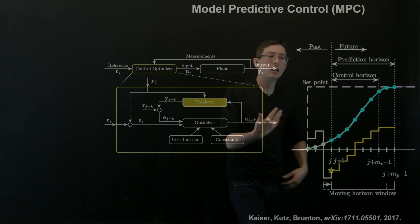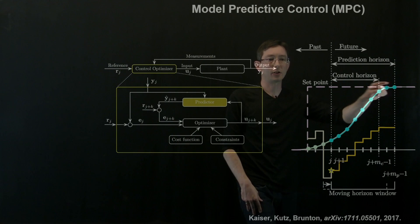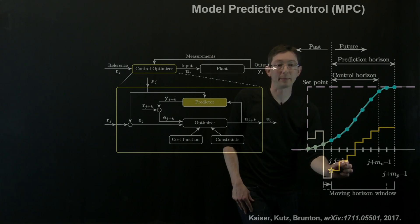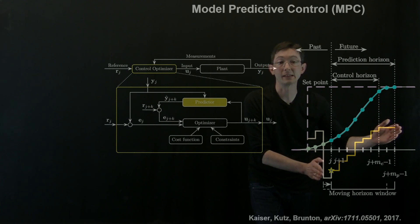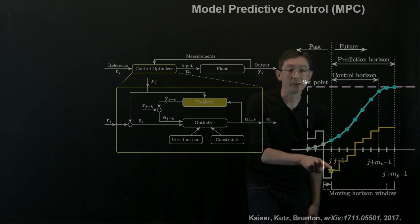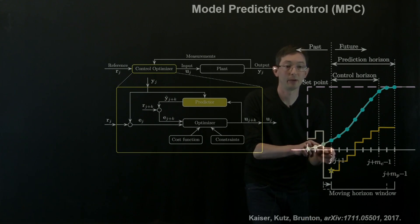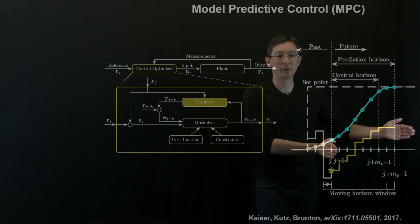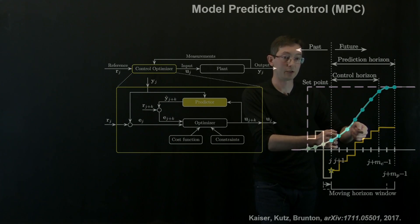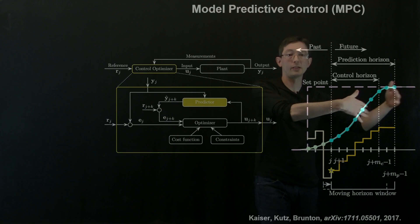Over here you can see this in a cartoon: you have your actual state trying to track some set point. This is your optimizing — what your model thinks is the optimum control input in the future — and you essentially lock in this optimizing control value for the next time step, your system steps forward, and then you reinitialize your optimization, move this window over, and redo everything again. You re-optimize, pick that next control value, step your system forward, re-optimize, and so on.